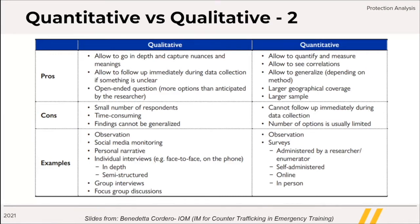Qualitative methods allow to go in depth and capture nuances and meaning, allow to follow up immediately during data collection if something is unclear, and use open-ended questions, allowing for more options than anticipated by the researcher. They are, however, based on a small number of respondents and they are more time consuming. The findings cannot be generalized. Examples of qualitative methods often used in our work are individual interviews with protection experts or service providers and focus group discussions.